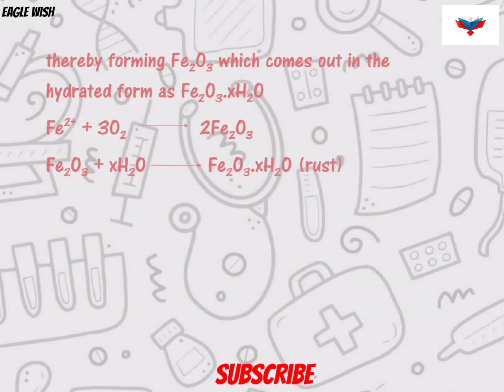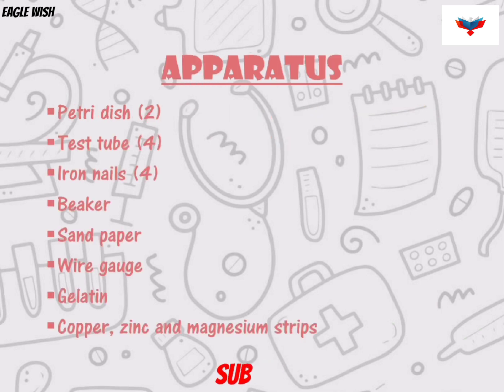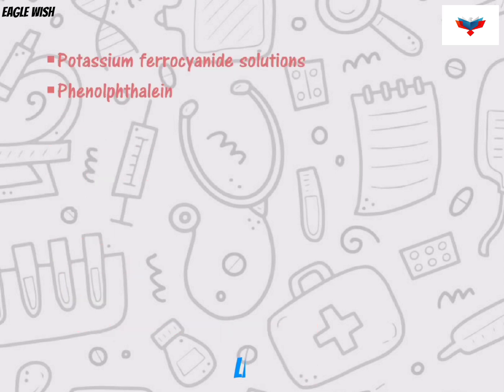The aim of this project is to investigate the effect of metal coupling on the rusting of iron. We will mention some apparatus which are required for our investigation.